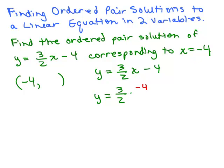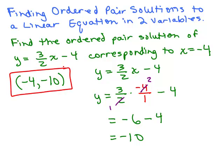Again, I'm going to write that as negative 4 over 1 since I'm multiplying by a fraction and then we simplify this. Now it's going to be negative because I have a positive times a negative here. And the 2 goes into 4 two times, so I have 3 times negative 2, that's negative 6. Be careful with your signs. Negative 6 minus 4 is the same as negative 6 plus negative 4, that's negative 10. So the ordered pair corresponding to x is negative 4 is this ordered pair: negative 4, negative 10.